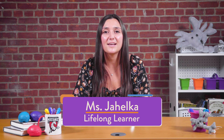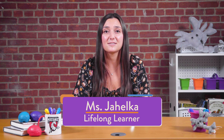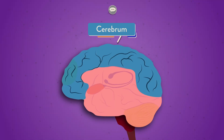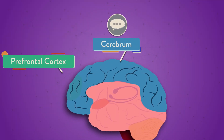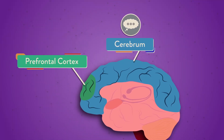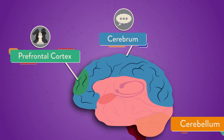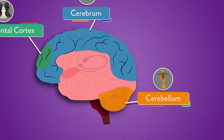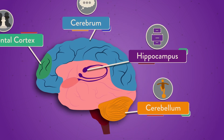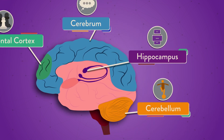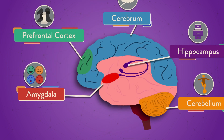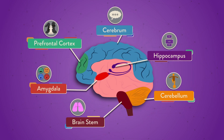Hello learners! You already learned that your brain has different regions that control different things. Your cerebrum helps you think and speak. Your prefrontal cortex helps you make smart decisions. Your cerebellum helps you move and balance. Your hippocampus helps you store and find memories. Your amygdala is where you feel your emotions. And your brainstem controls your involuntary movements like your breathing and your heartbeat.